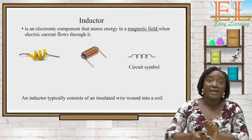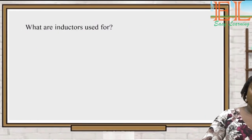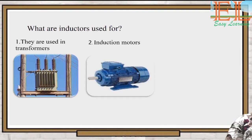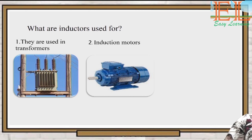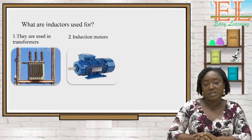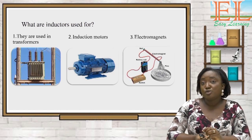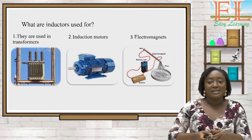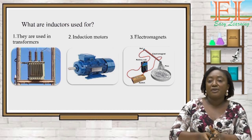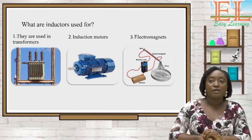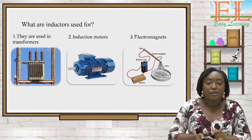An inductor is typically a wire wound into a coil. Inductors are used in transformers to either step up or step down voltage. They are also used in induction motors — for example, in bread-making joints or fufu-pounding machines, the motors linked to belts that cause machines to rotate contain many inductors. An inductor can also be used to change a nail into a magnet by winding coils of wire around the nail and connecting it to a voltage source, creating an electromagnet.